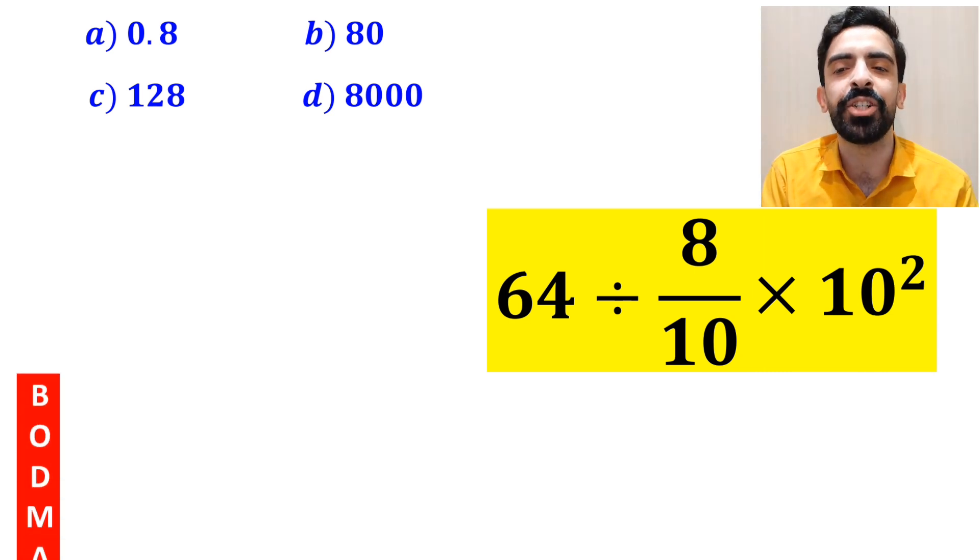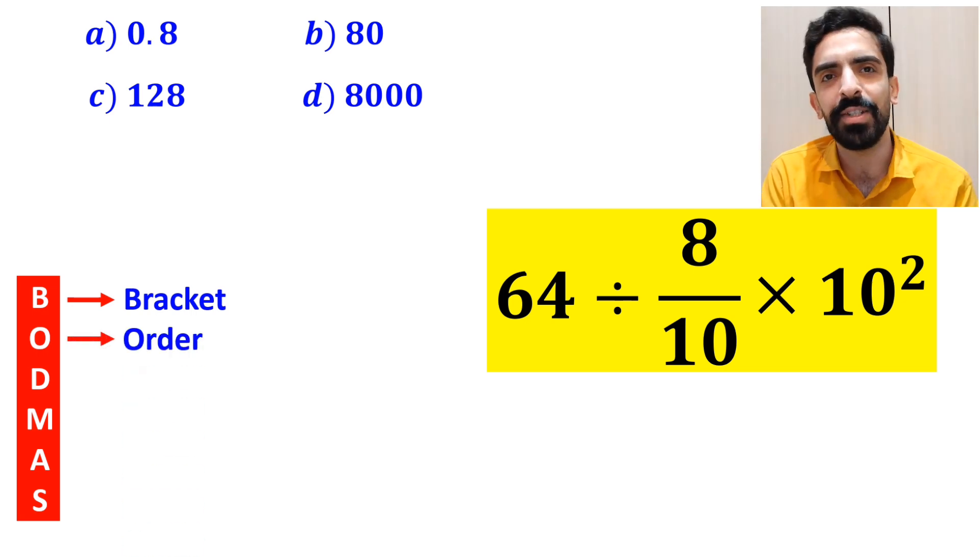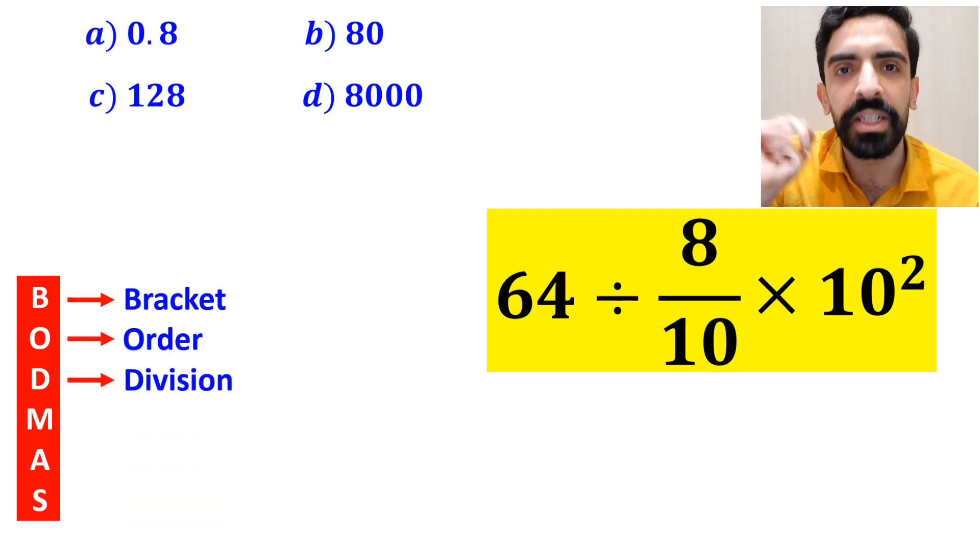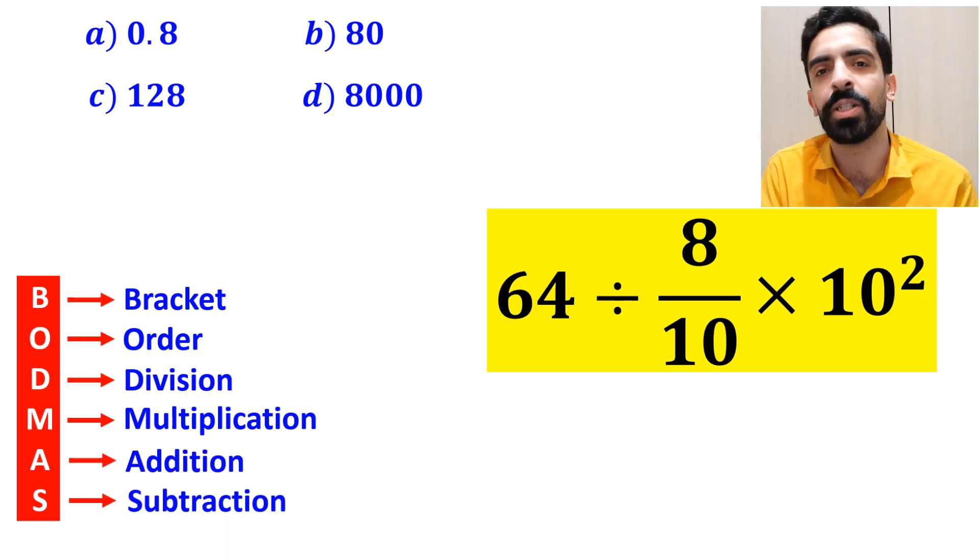To solve this question, we must follow the BODMAS rule. In this rule, B stands for bracket, O stands for order, D stands for division, M stands for multiplication, A stands for addition, and S stands for subtraction.